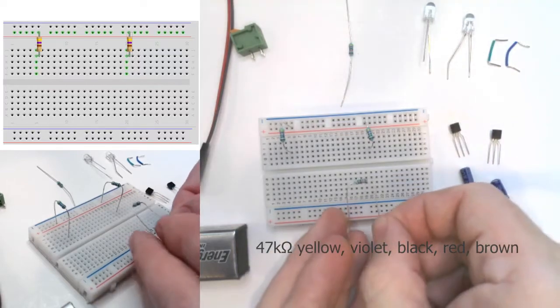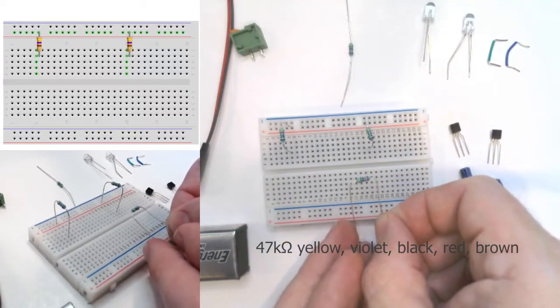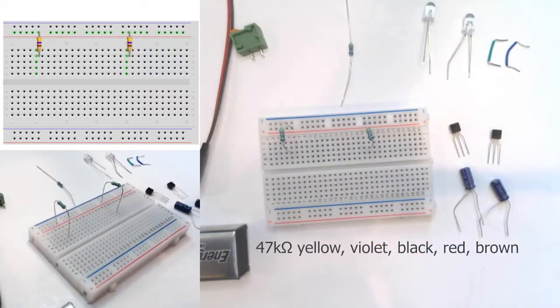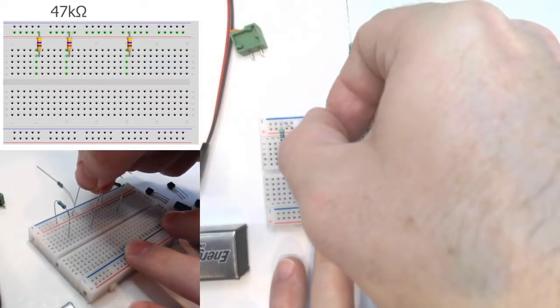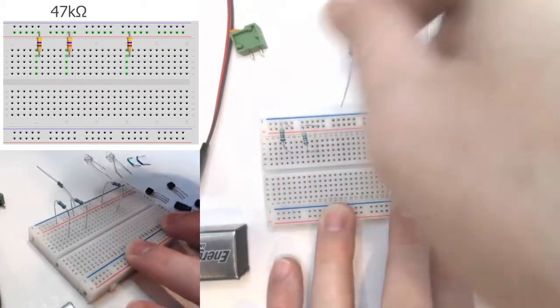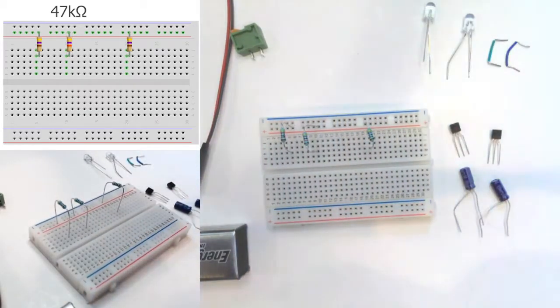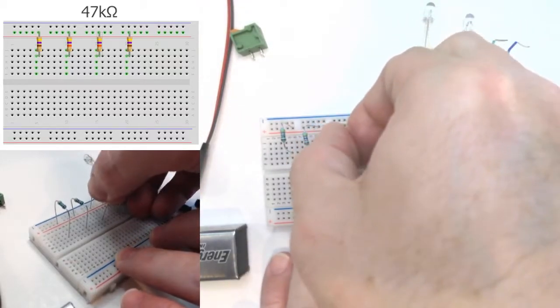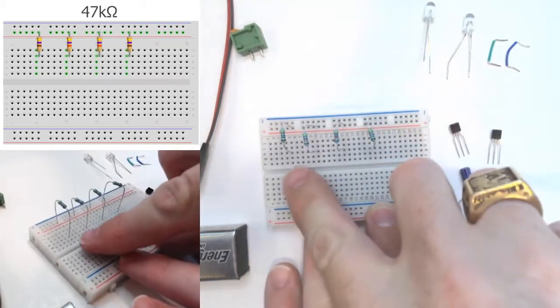If we look at this one, it is yellow, violet, black, red, and brown. And again, we're connecting from the positive bus strip to a separate terminal strip row.